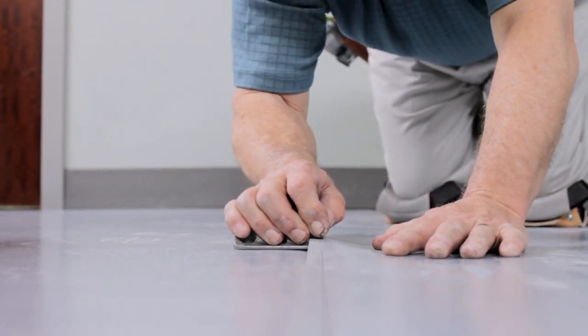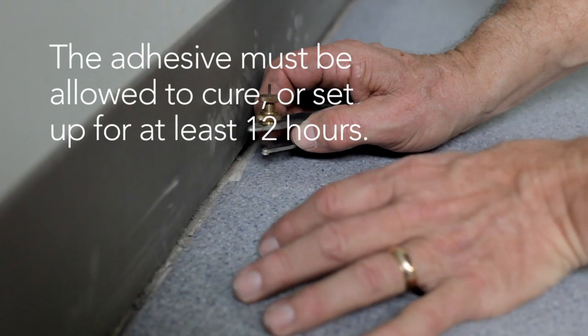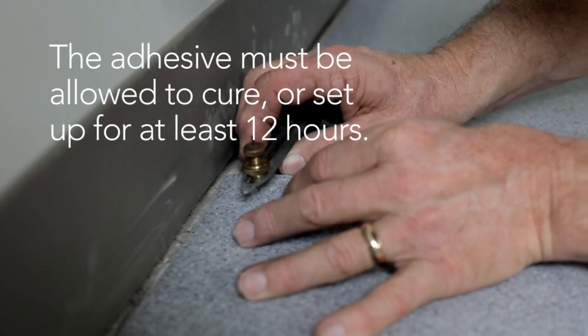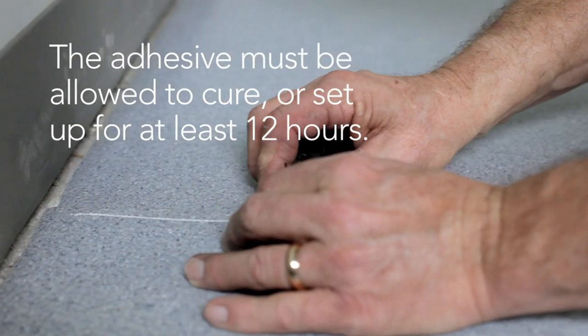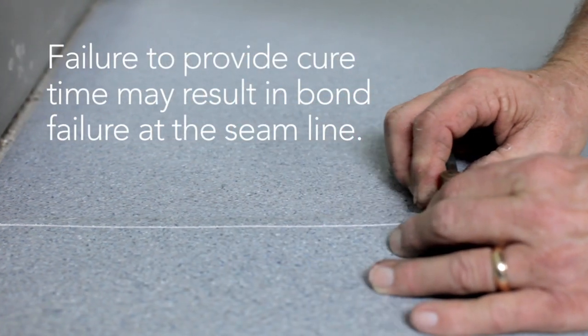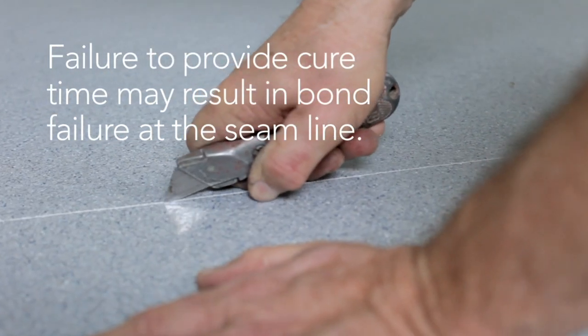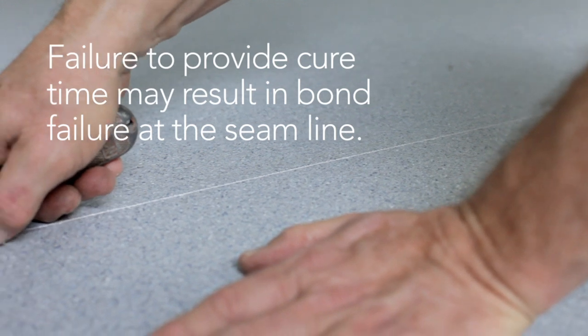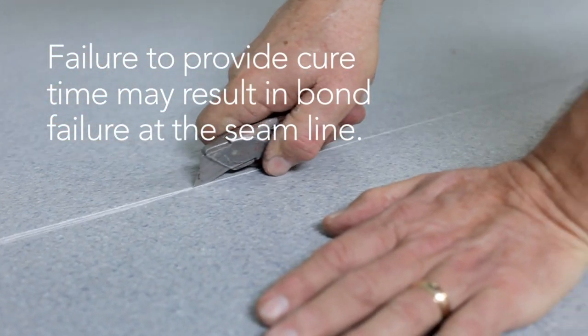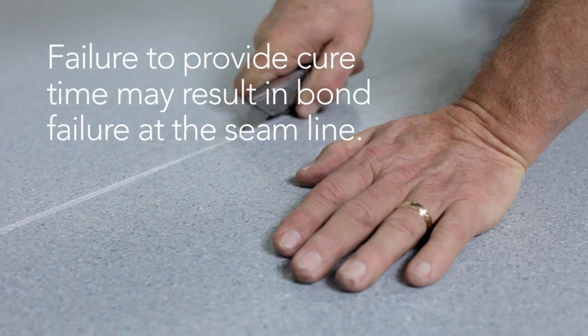The adhesive used to fasten the sheets must be allowed to cure or set up for at least 12 hours to be sure the moisture in the adhesive has dissipated. Failure to provide this cure time may result in bond failure at the seam line, which shows up as a split seam. This may not become evident for months after the installation is completed.